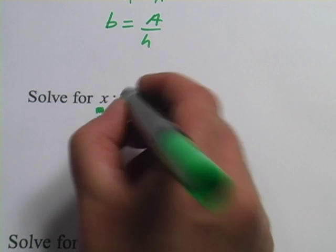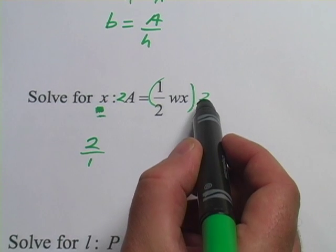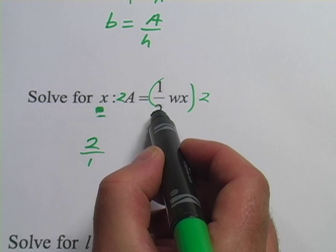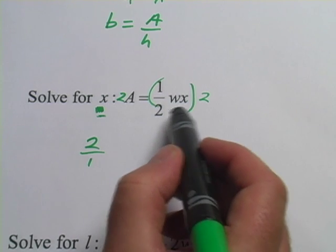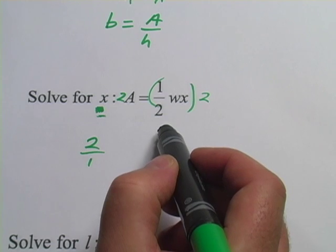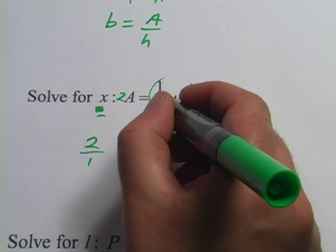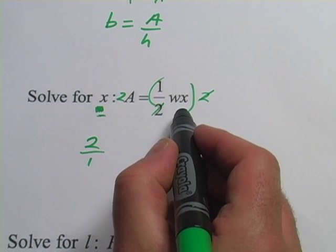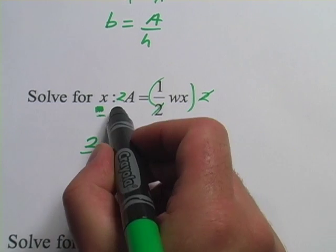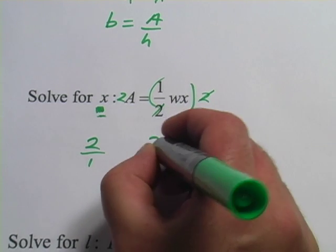And on this side, of course, I have to do the same thing. Now you could think of 2 times 1 half is 1, and 1 times anything is the same thing itself. So it's like the 2 and the 1 half cancel each other out. You can also think of the 2's canceling, a 2 on top and a 2 on bottom. Either way, you just get WX on that side. On this side, we get 2 times A, which we write as 2A.